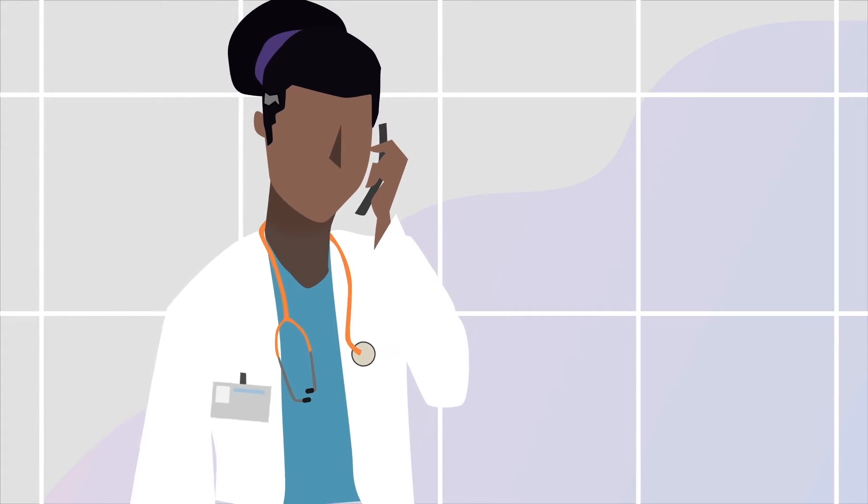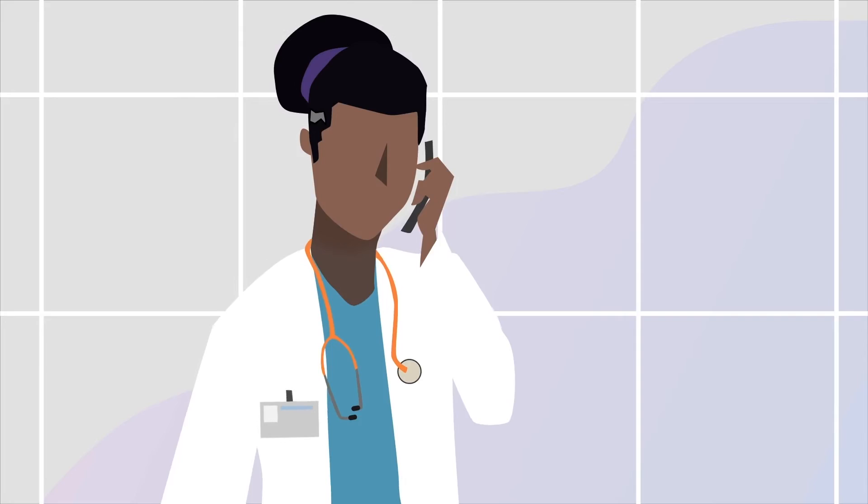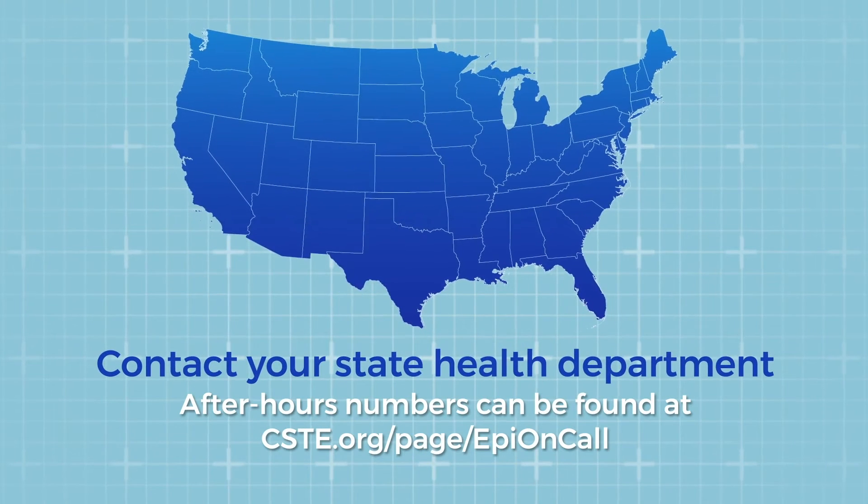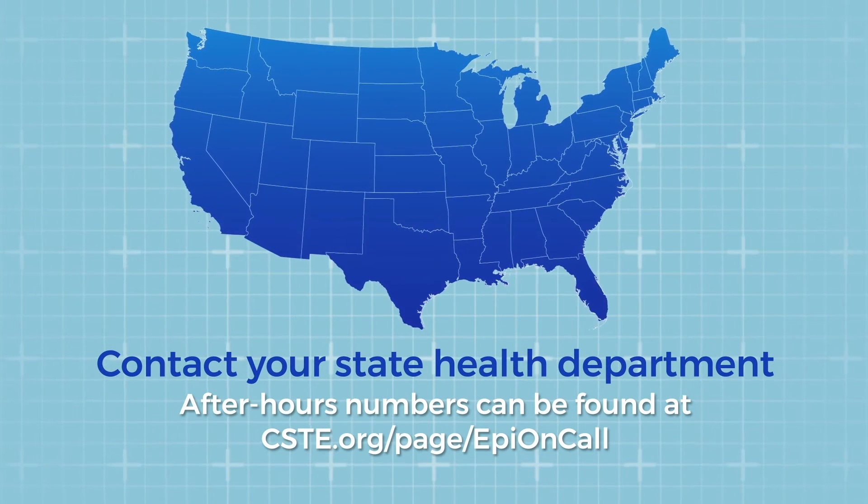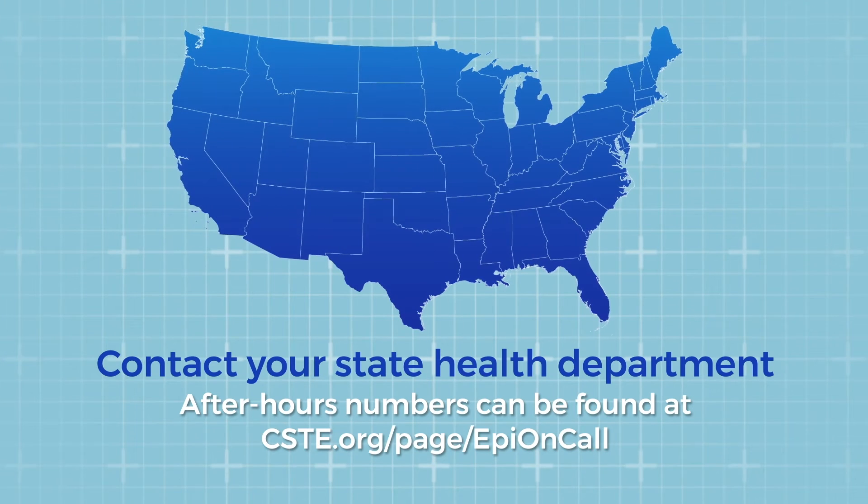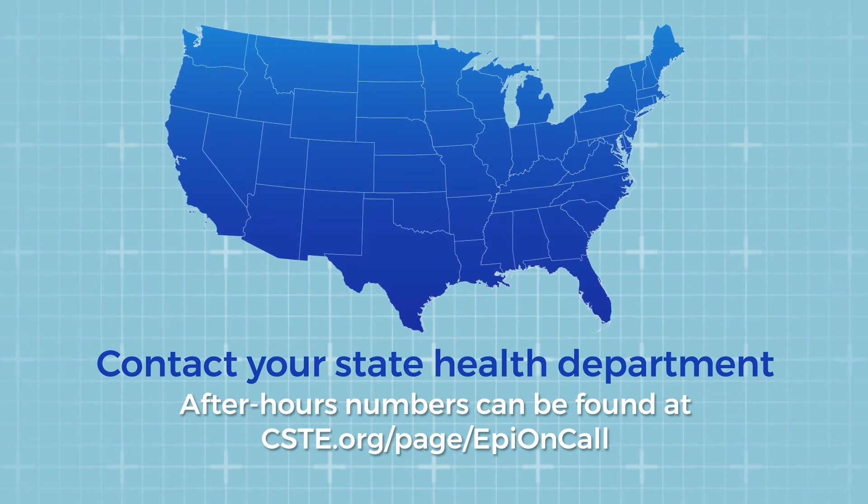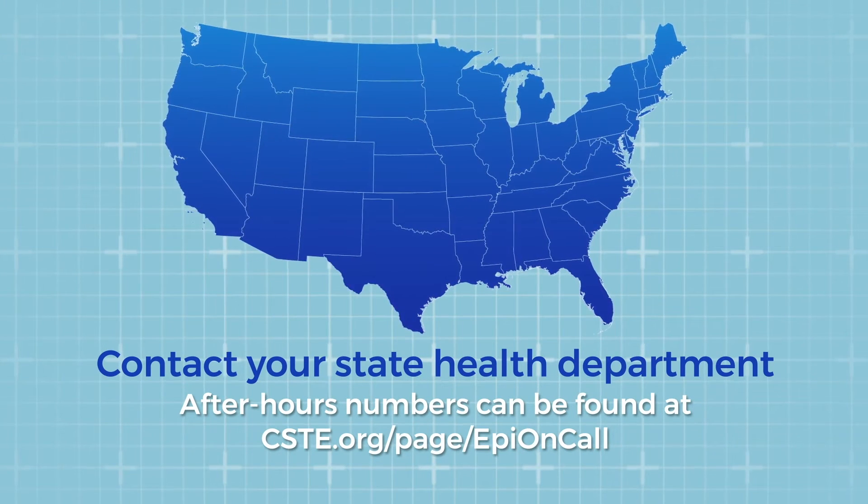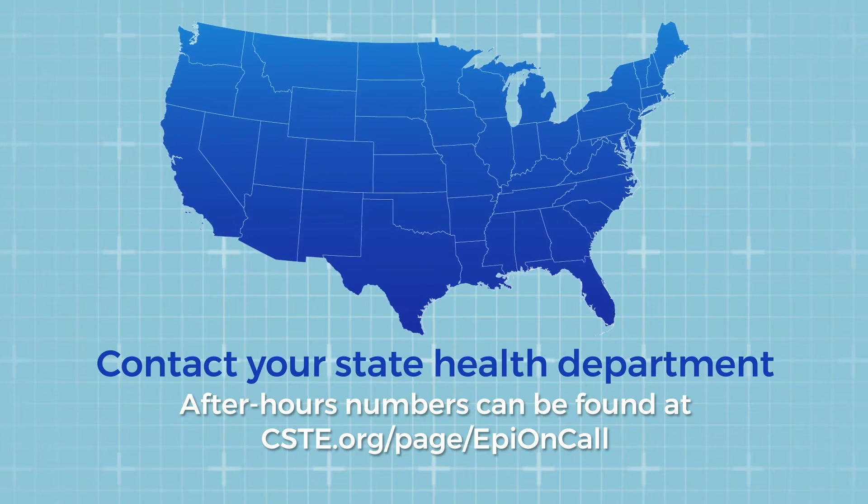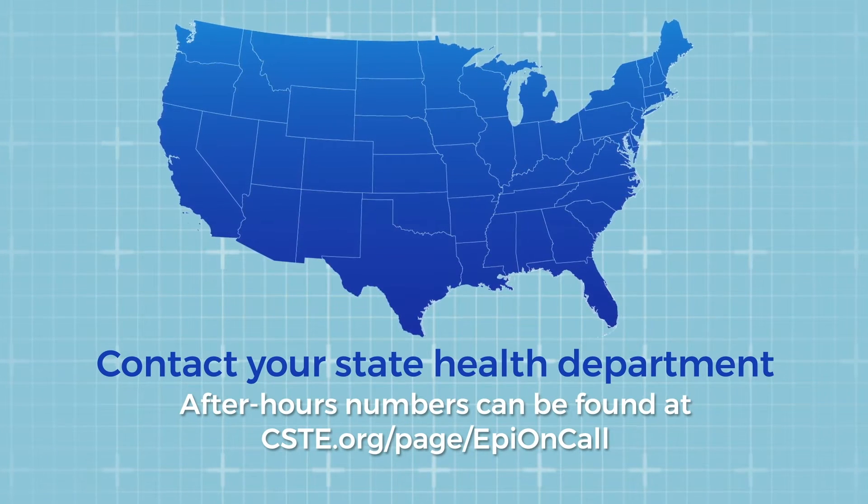If you think a patient might have botulism, call your state health department's emergency or after-hours number. CDC provides consultation at the request of state public health officials. State public health officials can reach CDC 24-7 at 770-488-7100.